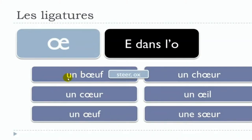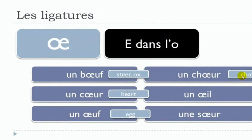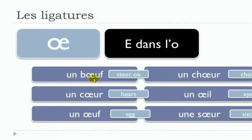These words are actually not that rare. Un bœuf means steer or ox, un cœur means heart, un œuf means egg, un chœur means choir, un œil means eye, and une sœur means sister. This letter is used more often than the previous one. If you can't produce the ligature on your computer, just write O and E separately — technically it's a mistake, but if you cannot do it another way, just write it as O and E.